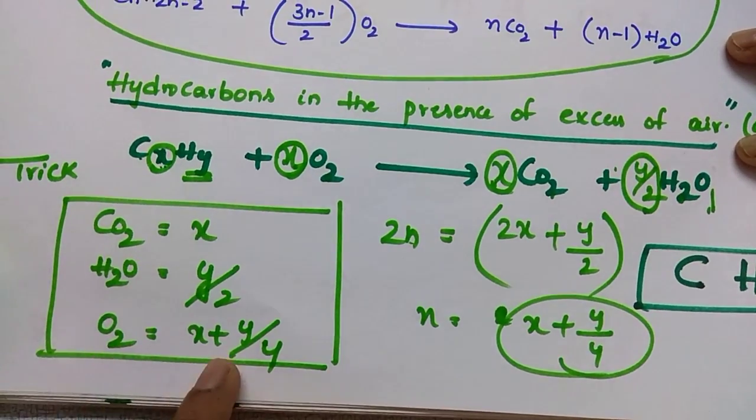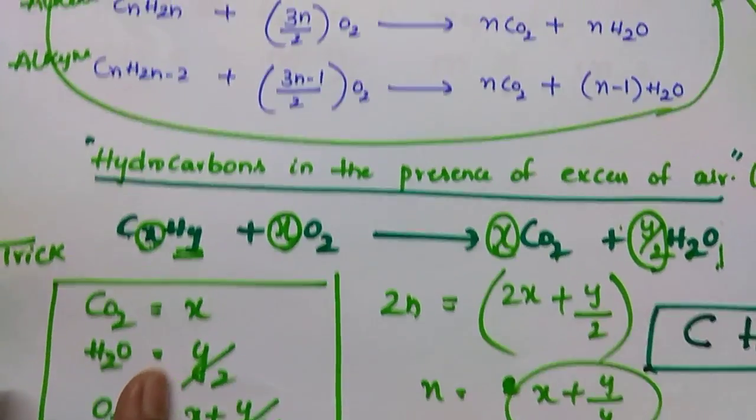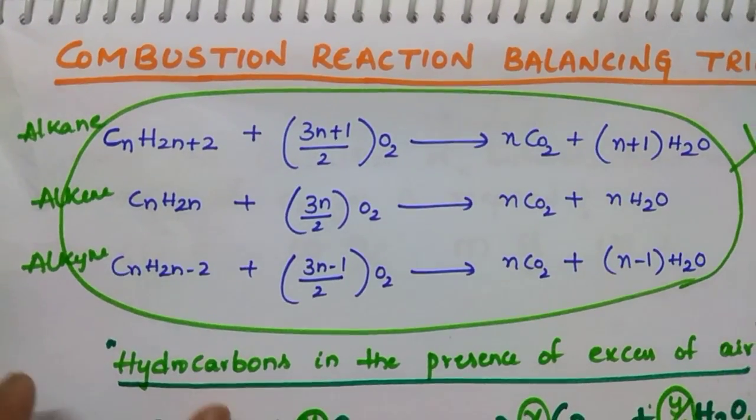Learn this also because sometimes they ask you to write the general expression properly. You have to mark how many oxygens: x plus y by 4 option you have to mark. I hope you like this trick. Thanks for watching.